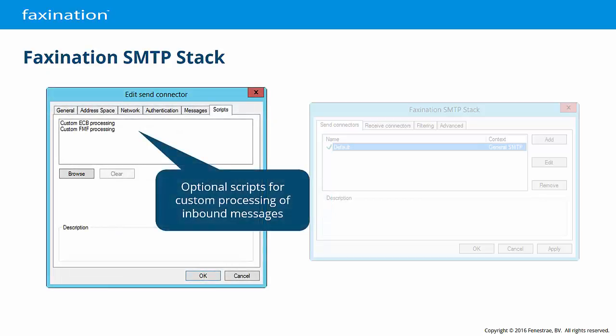The Scripts tab defines optional scripts that can be run on outbound messages. ECB scripts can be used to change the properties of an outbound message. FMF scripts can be used to modify both the properties and the attachments of an outbound message. When you don't need to modify the attachments of a message, a custom ECB script is more efficient. There are no send connector scripts configured by default.